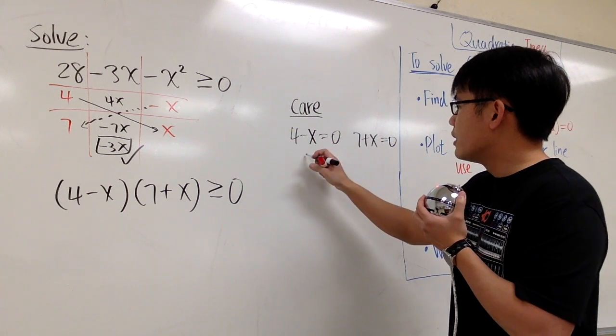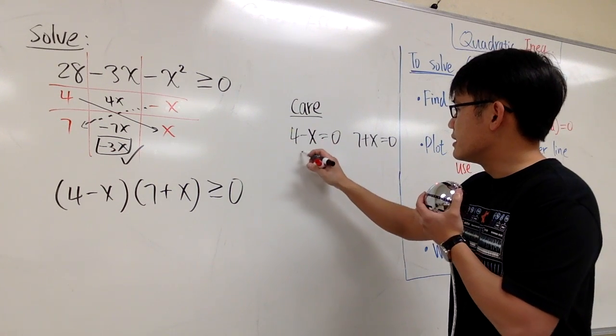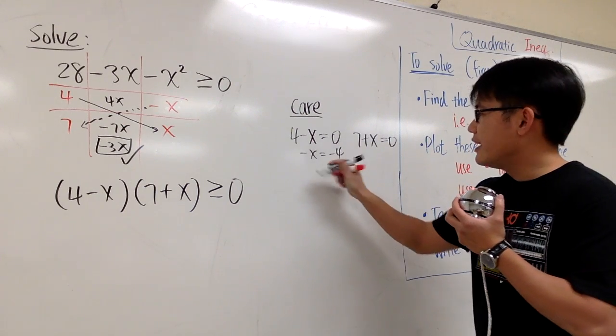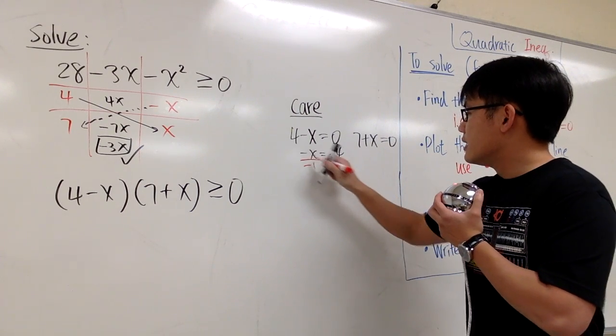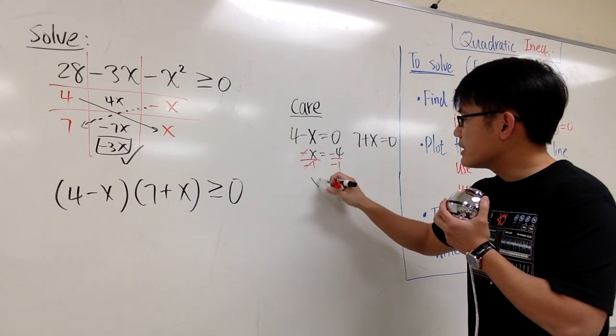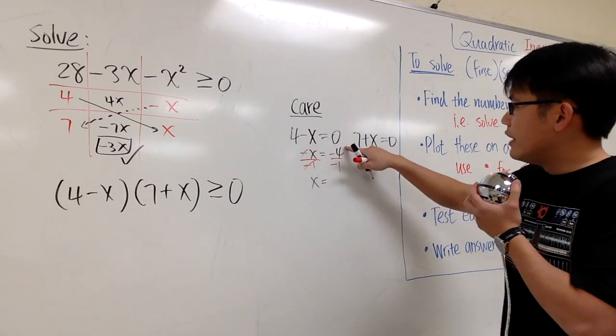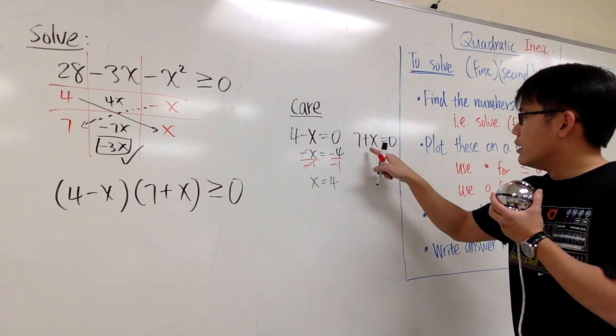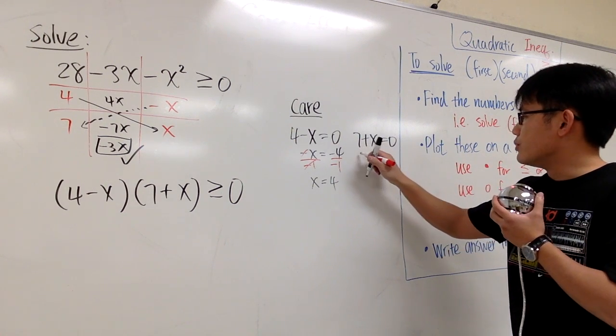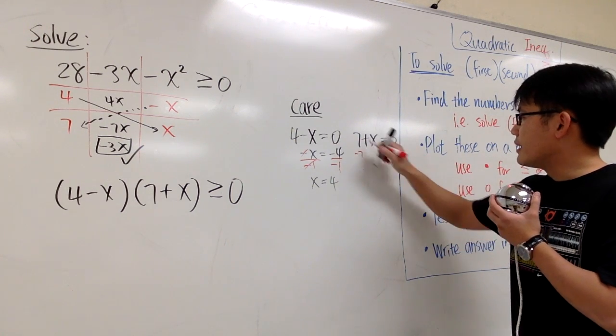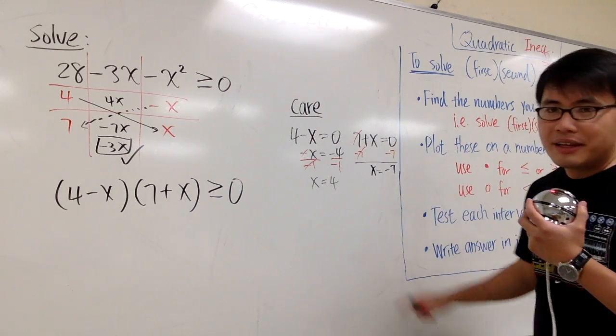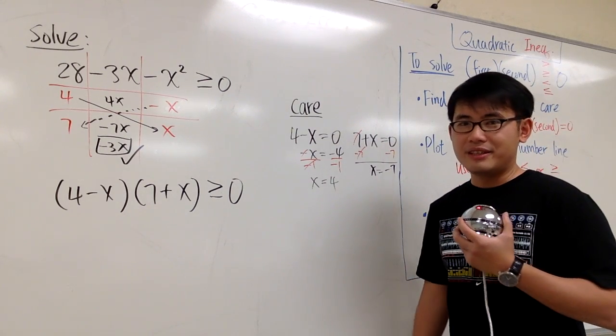To do work right here, I can minus 4 on both sides. So this is negative x equals to negative 4. And then I can divide by negative 1 on both sides, so that I will end up with positive x equals to positive 4. And right here, 7 plus x is equal to 0, so if we minus 7 on both sides, x will be negative 7. So these are the two numbers that we care in this case.